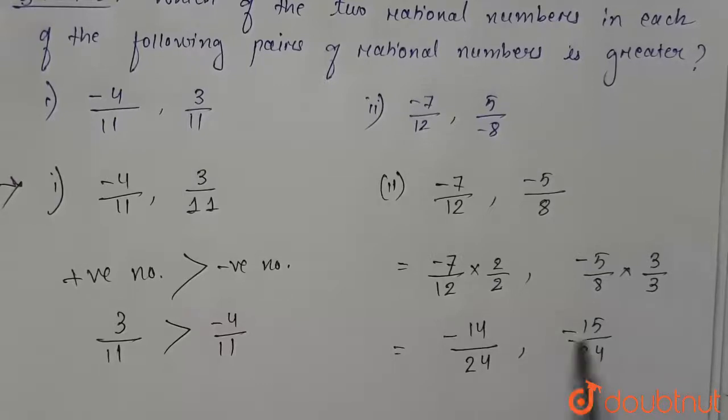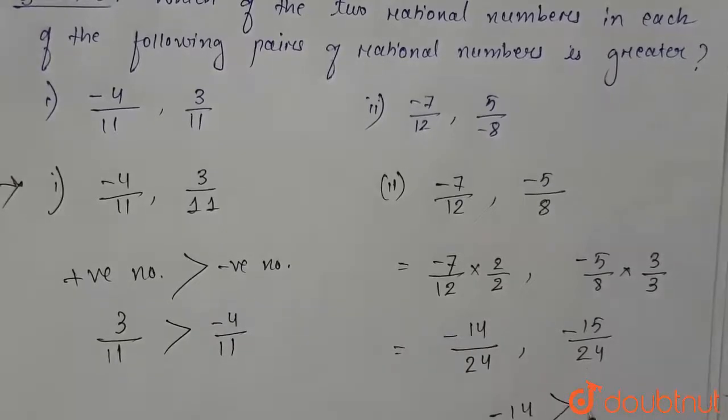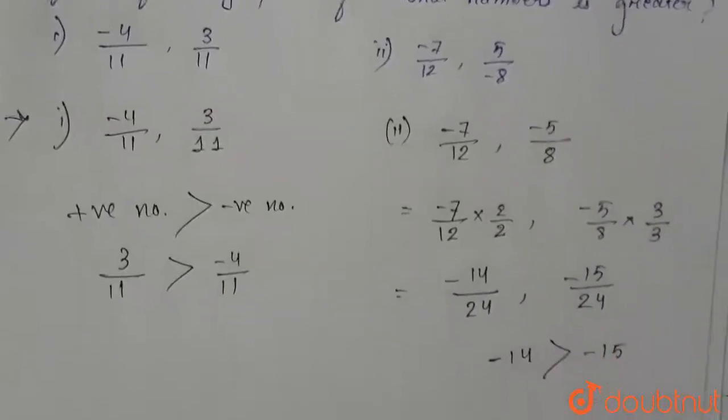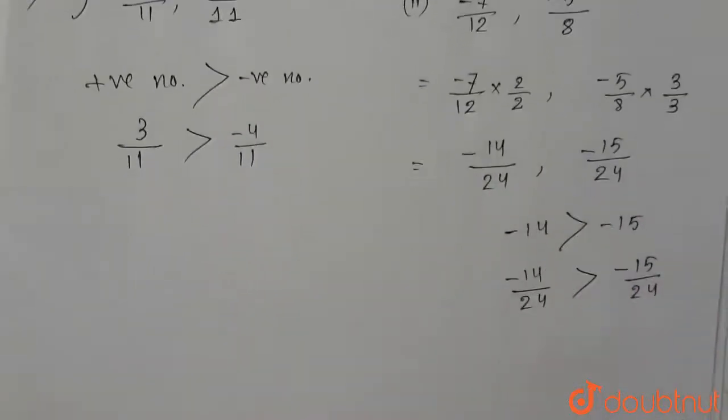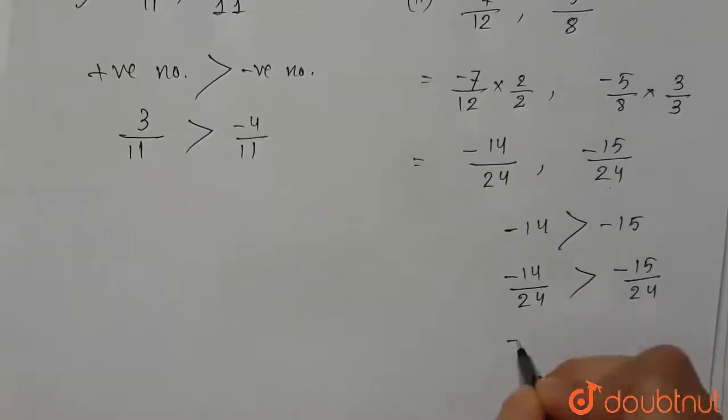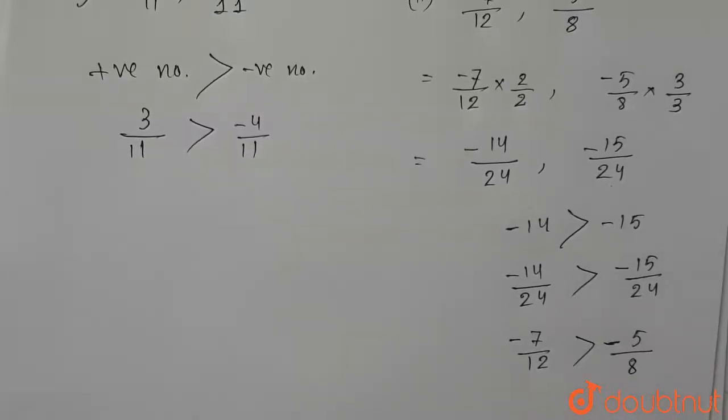Now we know that -14 is greater than -15. So therefore we can say that since the denominators are equal, -14/24 will be greater than -15/24, which means that -7/12 will be greater than -5/8, and this is the required answer. Thank you.